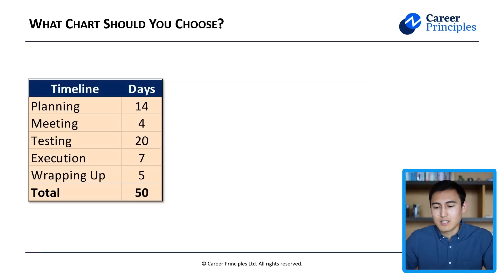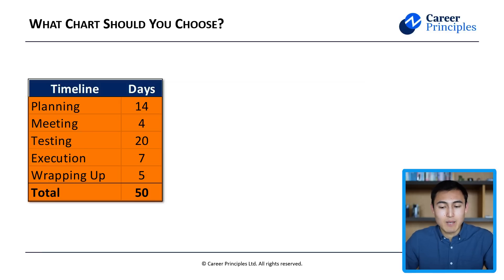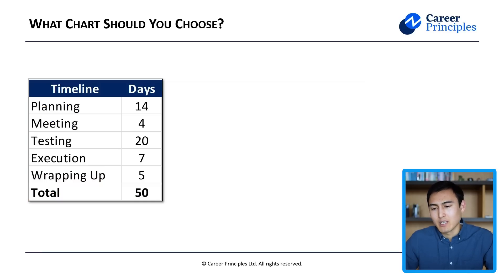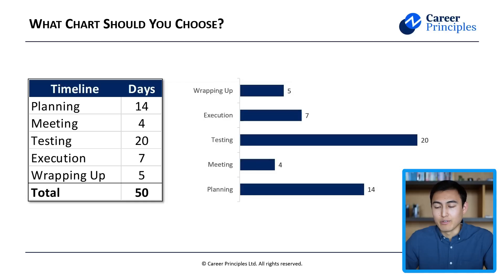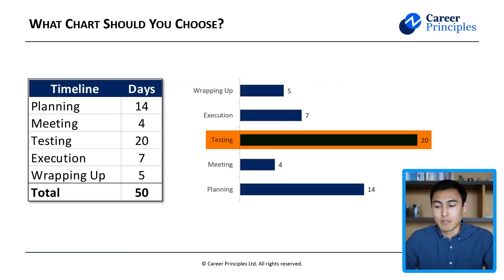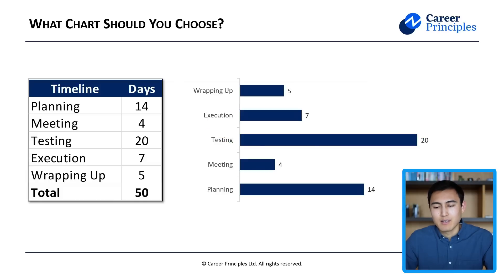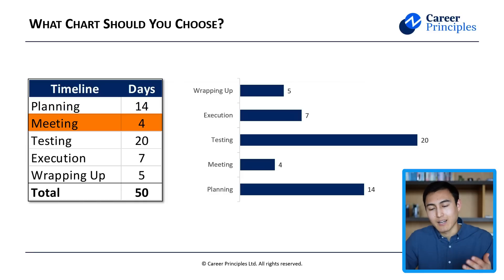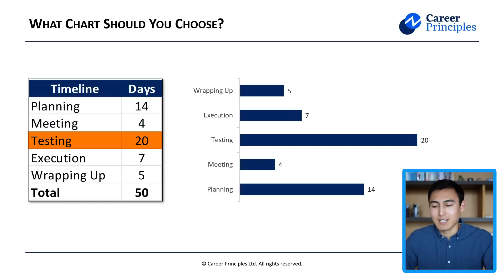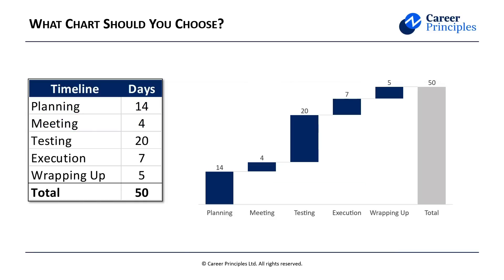Let's take a look at another example with a different table. We have a timeline of days for some kind of project. You might think of using a bar chart — it does show that testing is the biggest phase, which is quite positive. That said, it's not something that's cumulative, and it should be in this case: after 14 days we unlock the meeting phase, then the testing, and so forth. So instead, maybe a waterfall chart makes more sense.